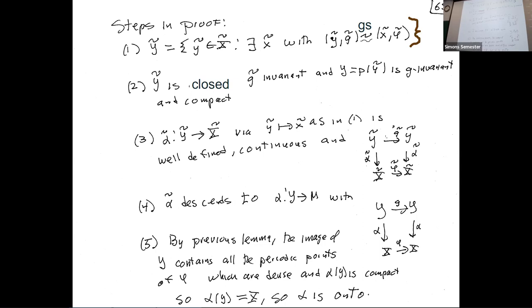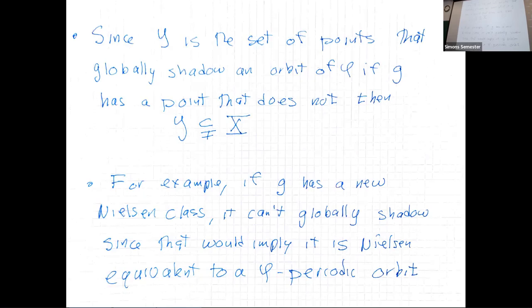The important thing for our conceptual understanding is what the set Y is. If G has a point that does not globally shadow, then Y is a proper subset — you don't get all the dynamics of G sent down to that of phi. The easiest example is if in the map G you create a new Nielsen class: a new Nielsen class can't shadow one for phi, because that would mean it was Nielsen equivalent, which it can't be if it's new.